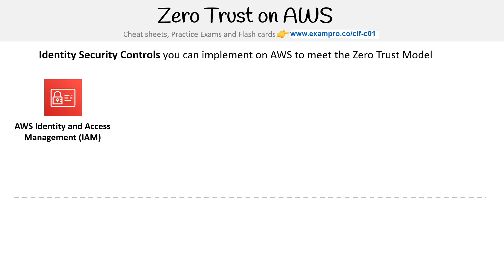On AWS, we have Identity and Access Management — IAM. This is where we create our users, groups, or policies. An IAM policy is a set of permissions that allow you to say, okay, this user is allowed to use these services with these particular actions.